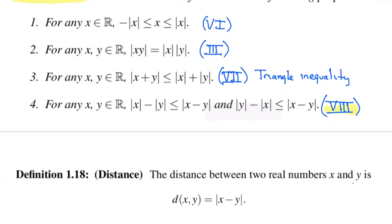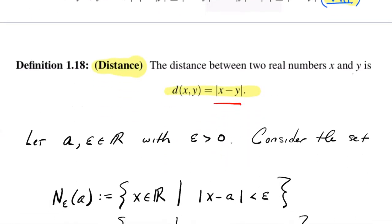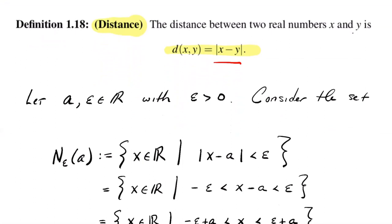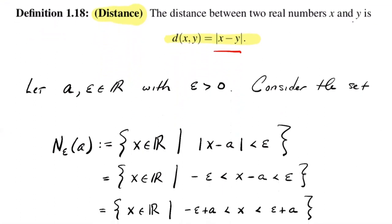The title of the lecture was absolute value and distance, and I haven't said the word distance yet. The second and final definition in the section, Definition 1.18, is distance. We're going to define the distance between two real numbers x and y to be the absolute value of their difference. It's very important that you think about what I mean geometrically by the distance between two numbers on a number line. But algebraically, to calculate that distance, I use absolute value: the distance between x and y is |x - y|.